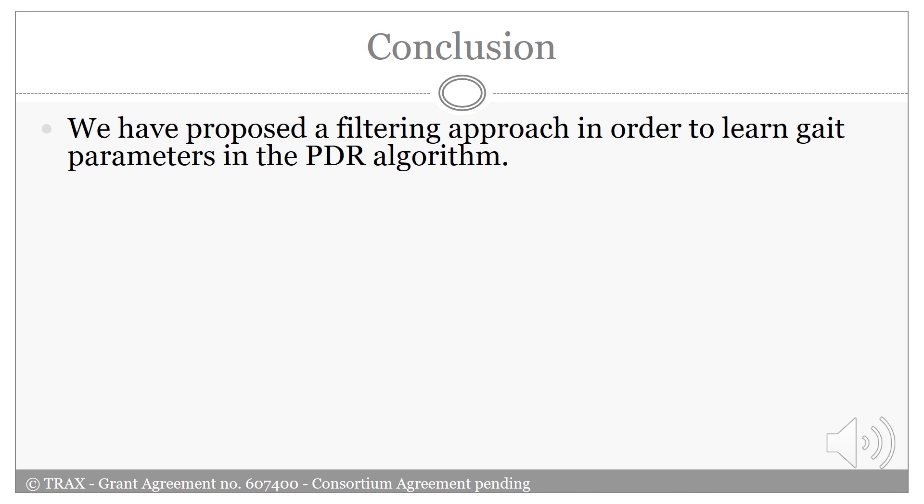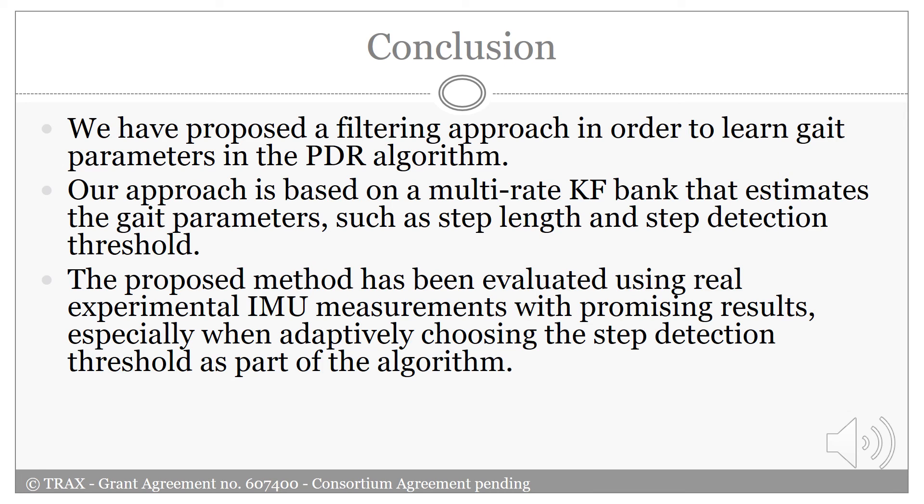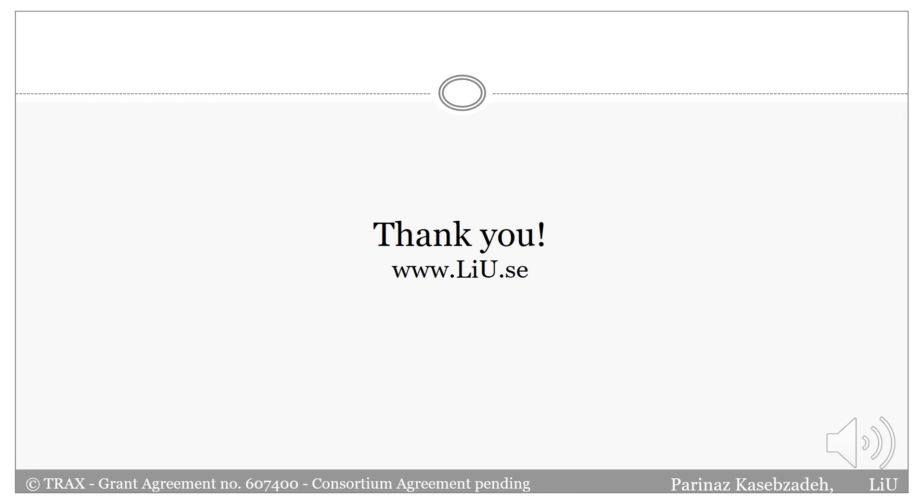As a summary, we have proposed a filtering approach in order to learn gate parameters in the PDR algorithm. Our approach is based on a multi-rate Kalman filter bank that estimates the gate parameters such as step length and step detection threshold. The proposed method has been evaluated using real experimental IMU measurements with promising results, especially when adaptively choosing the step detection threshold as part of the algorithm. The result deteriorates if a fixed threshold is used that is not properly chosen to suit the current user.